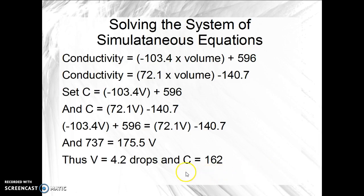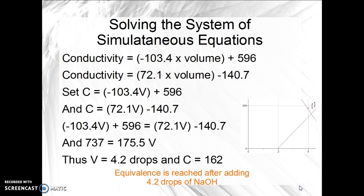We then plug the V into the equation up here to see that C at that point must be 162. Here's a kind of an approximation. We can check our work and see that indeed this looks about 162 high compared against the 200. And this is a little over 4. So 4.2 is a reasonable answer for the volume. Equivalence is reached here after adding 4.2 drops of sodium hydroxide.